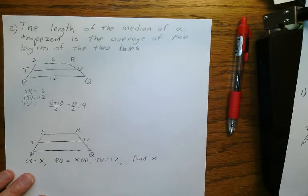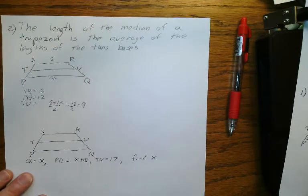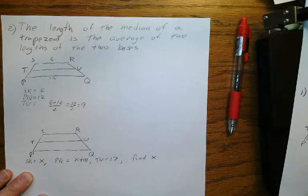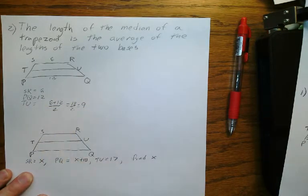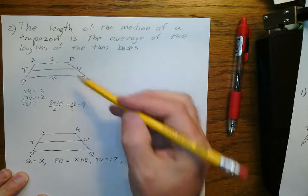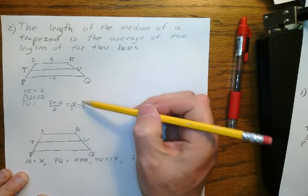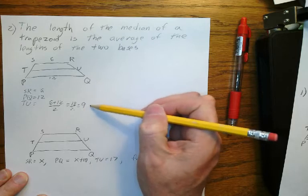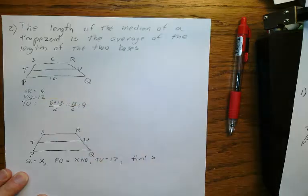That, by the way, is called splitting the difference. If you have two numbers and you want to split the difference, you take the number midway between them, which is also called the average. Notice 6 to 9 is 3, and 9 to 12 is 3. It splits the difference.